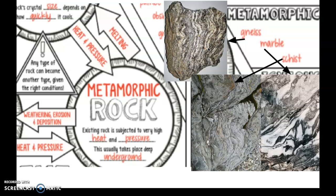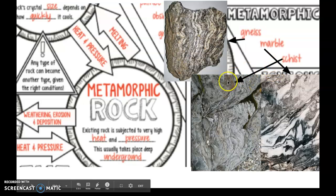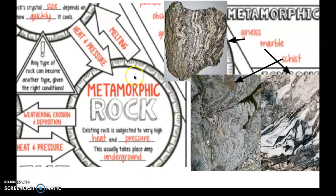We've got some types of metamorphic rock over here for you to look at. They all look different. We've got gneiss, we've got marble over here — also could be a type of countertop — and we have schist right here. All types of metamorphic rock. The key here is that heat and pressure. So if I have an igneous rock and I put it under heat and pressure, it's going to become a metamorphic rock. If I have a sedimentary rock and I put it under heat and pressure, it's going to become a metamorphic rock. So memorize heat and pressure.